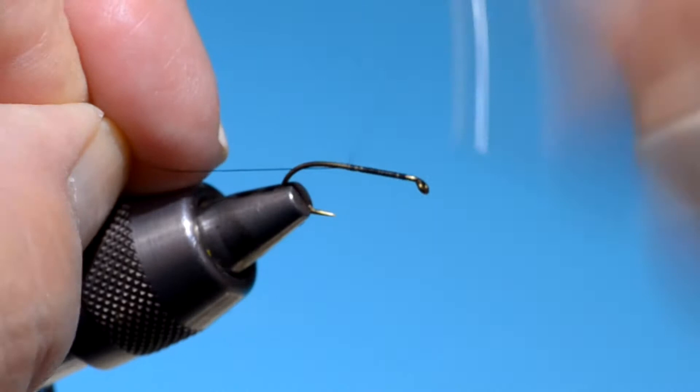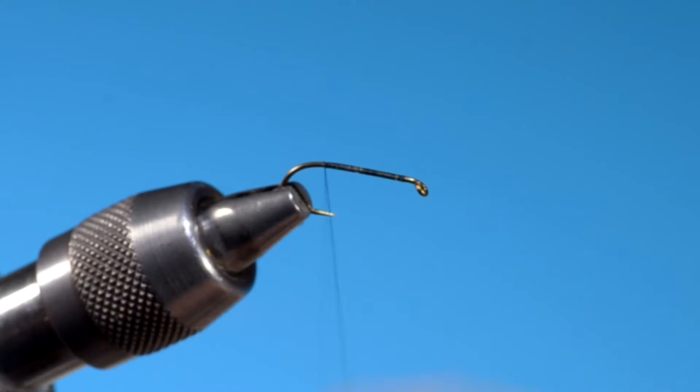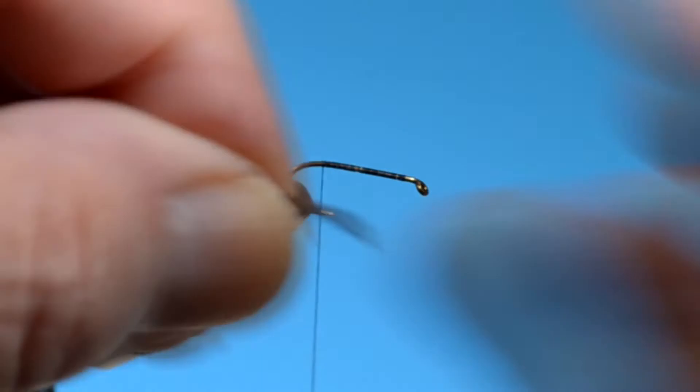You could just do some partridge hackle at the front or maybe some mottled hen hackle, similar to what I use in the tail here. This fly can be tied a number of different ways, and you should probably experiment around and find something that works best for you. I love tying wings, so I'll do the winged version here.